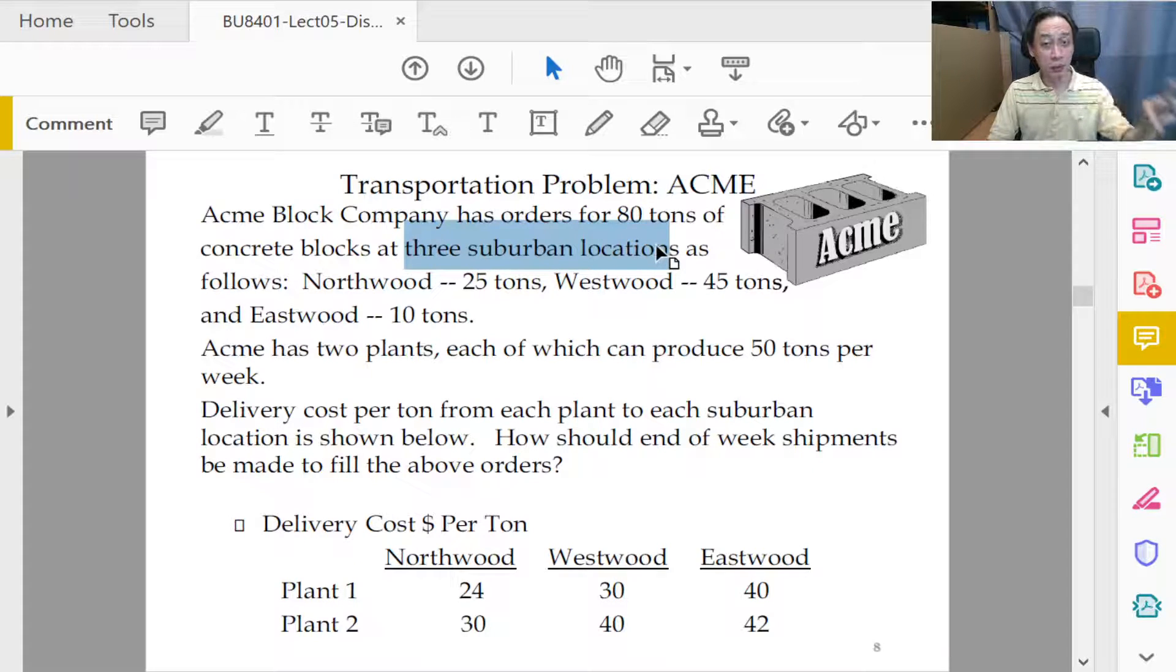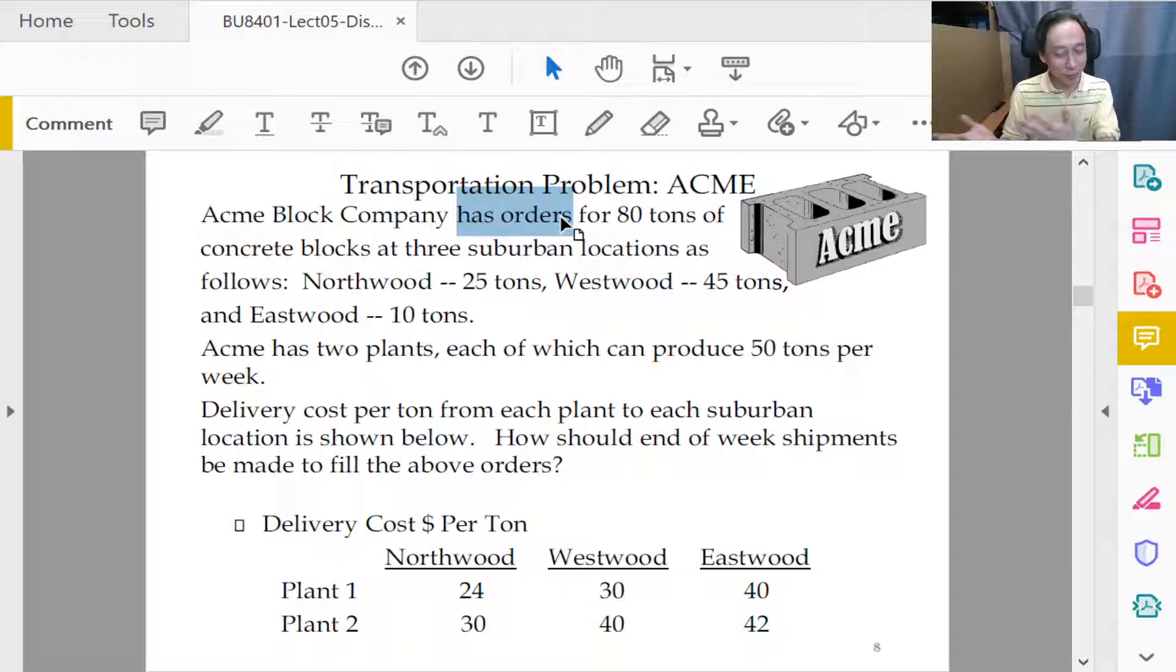Now the three locations can be source can be destinations but let's look at that. Has orders. Who gives orders? Does the supplier give orders or customer gives orders? Now supplier doesn't give order to customer. Supplier gives invoice. Customer gives orders to suppliers and demands for this kind or this quantity of goods.